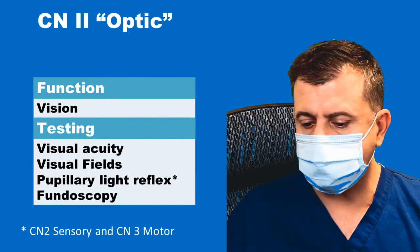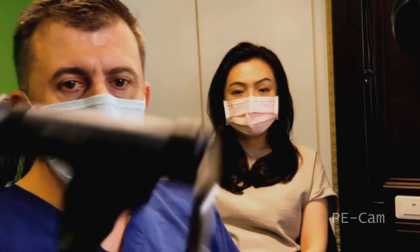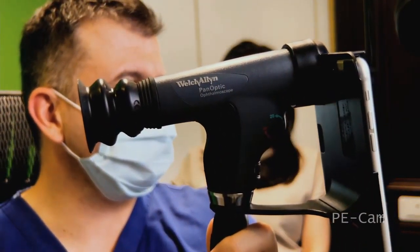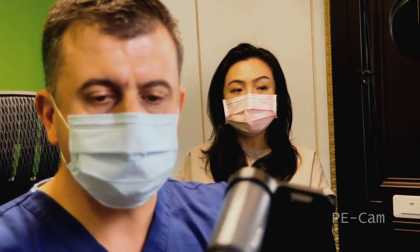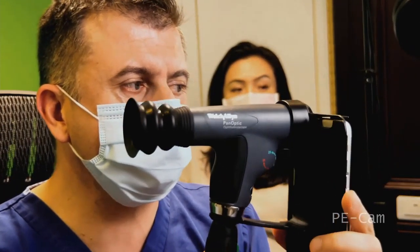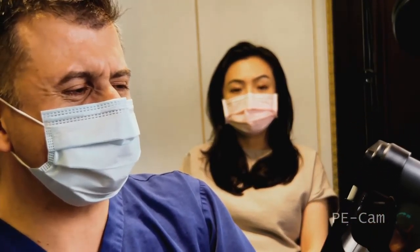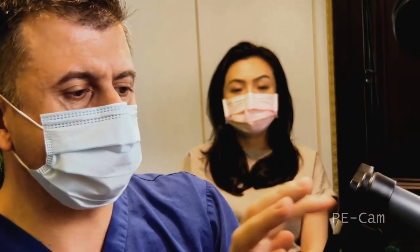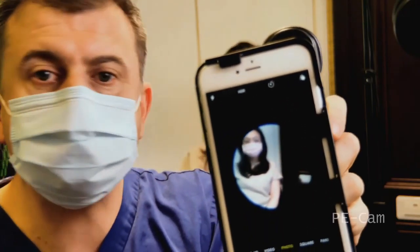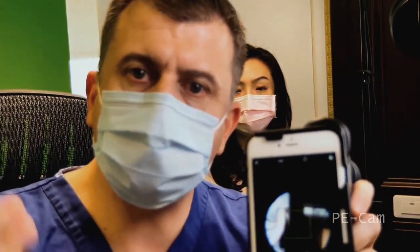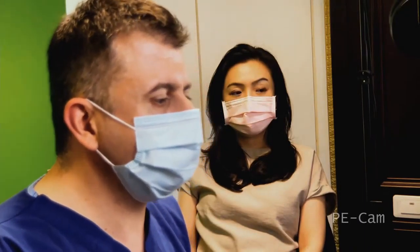Finally, we're going to talk about fundoscopy. I have a panoptic ophthalmoscope here — it has a very wide view so you can see a lot, much better than the small ones. It comes with an attachment where you can put your iPhone and actually see the image from the ophthalmoscope on your phone, take pictures, and take videos. This is really useful for teaching or for documenting retinal changes in a diabetic patient.